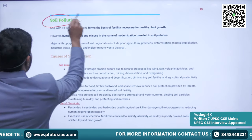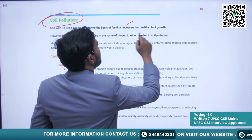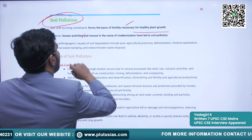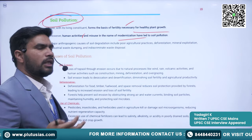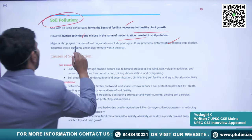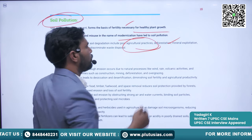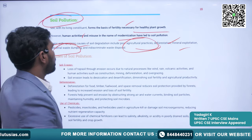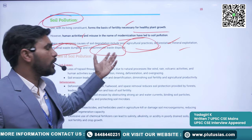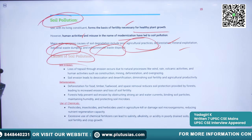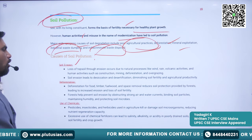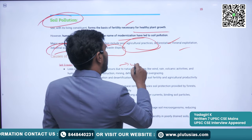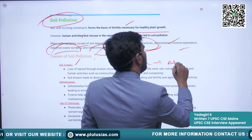Soil forms the basis of fertility necessary for healthy plant growth and is an important natural resource. Due to human activities and misuse in the name of modernization, soil pollution has increased. Anthropogenic causes of soil degradation include poor agricultural practices, deforestation, mineral exploitation, industrial waste dumping, and indiscriminate waste disposal. Major causes of soil pollution include soil erosion, where the top layer of soil is removed primarily by water and sometimes by air.